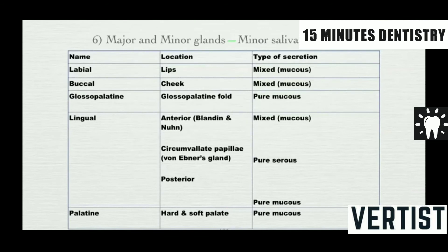Regarding the minor salivary glands: labial mucosa glands are mixed, predominantly mucous. Buccal mucosa glands are again predominantly mucous. Lateral palatine glands are purely mucous. Anterior lingual glands are mucous. The von Ebner's glands associated with circumvallate papillae are purely serous. The posterior lingual glands and palatine glands present in the hard and soft palate are purely mucous.